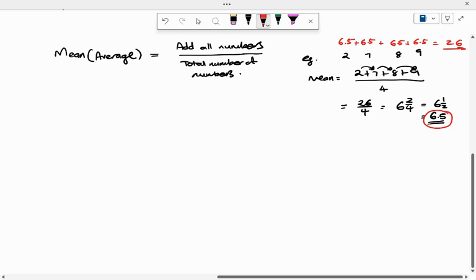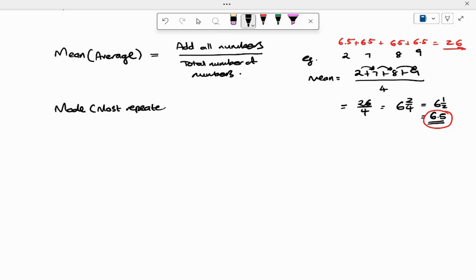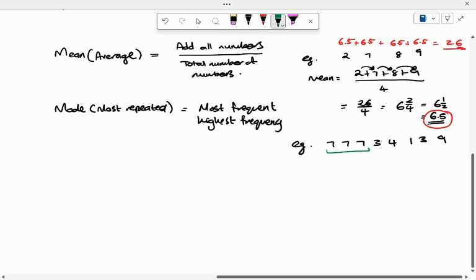Then we have the mode. The mode is the most repeated, so if you have a number that's most repeated, it can be most frequent or highest frequency. And if I look at an example, suppose I have 7, 7, 7, 3, 4, 3, and 9. You can see I've got seven three times, so my mode will be 7. The mean is 6.5 and the mode is 7.